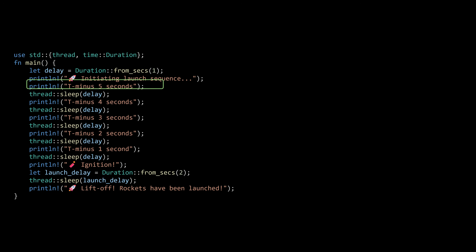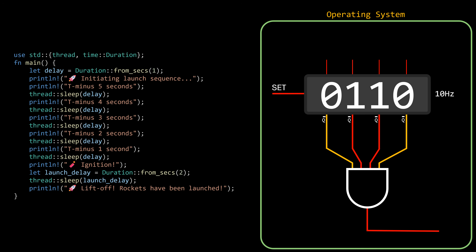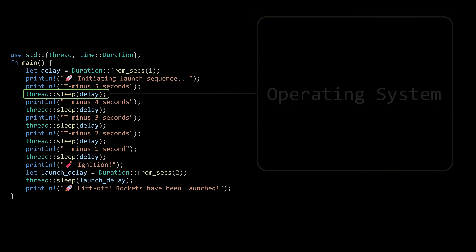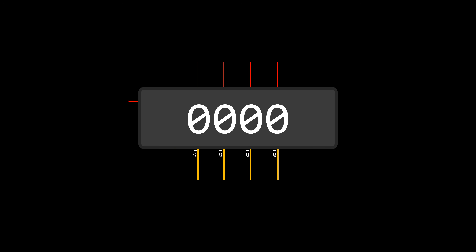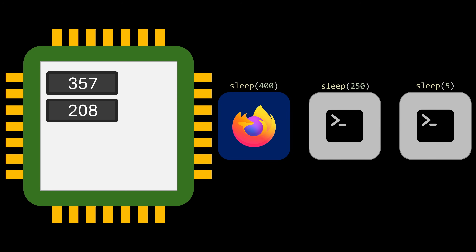So when a process calls sleep, the operating system can be invoked through a system call. It sets the timer, and when the timer reaches zero, a hardware interrupt is triggered, causing the OS to resume the process that originally called sleep. But here's the catch: a timer is a hardware resource — we can't just create more of them at runtime. If a chip only has two embedded timers, then only two processes can use them at once. A third process calling sleep would have to, somewhat ironically, wait for one of the timers to become available before it can start waiting for its own time to pass. Such limitations don't scale well in a general-purpose operating system.